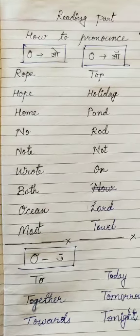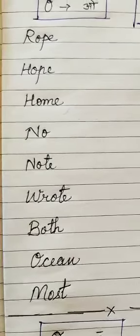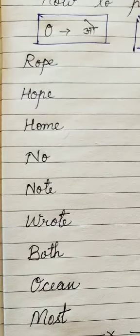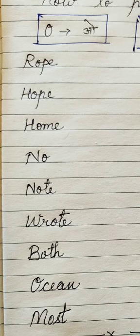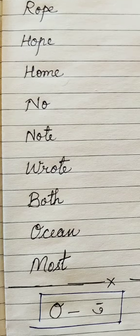So, we have some examples of O. Simple O means short vowel sound — रूप, हूप, हूँम, नो, नॉट, रूट, बोथ, ओशियन and मौस्ट.